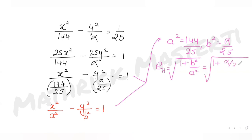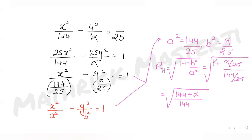Substituting: √(1 + (alpha/25)/(144/25)) = √(1 + alpha/144) = √((144 + alpha)/144) = (1/12)√(144 + alpha). So the eccentricity of the hyperbola is (1/12)√(144 + alpha).